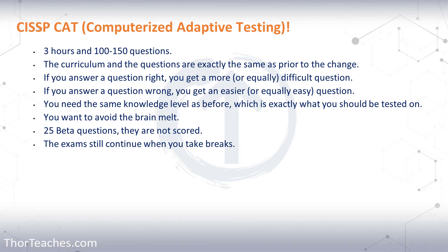The trick here is to get as many of the hard questions right, but also spend more time on the first 10, maybe 20 questions. Because the more of those you get right, the harder questions you get, the more points you get per question, and you raise the CAT curve up to a point where you need to answer fewer questions right to pass the exam, because each question is worth more points.